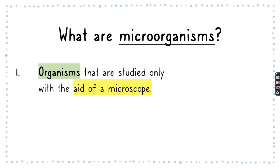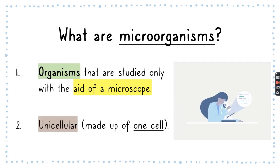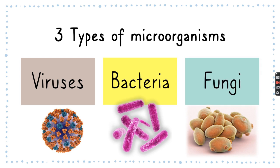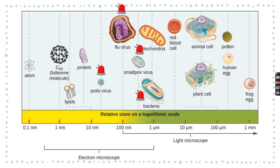Microorganisms are very, very small, and they are only studied with the aid of microscopes. They are unicellular, meaning they are made up of just one cell. There are three types of microorganisms: viruses, bacteria, and fungi.